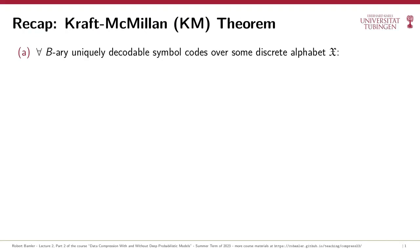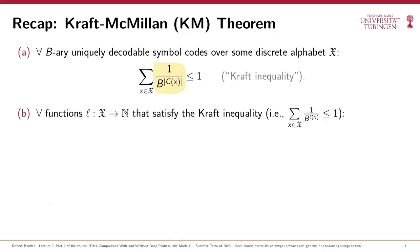In the last video, we proved the Kraft-McMillan theorem, which states a bound on the codeword lengths of uniquely decodable symbol codes. Part A states that every uniquely decodable symbol code satisfies the Kraft inequality — the sum of the shortnesses of all codewords must not exceed 1, where the shortness of a codeword is 1 over b to the power of the codeword length, with b usually 2 for binary compression. Part B states that for any target codeword lengths L satisfying the Kraft inequality, there exists a corresponding uniquely decodable, even prefix-free, symbol code with those codeword lengths.